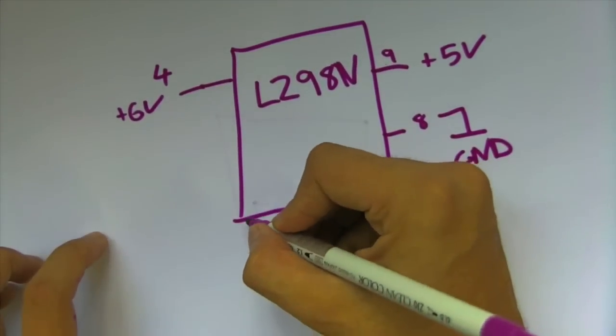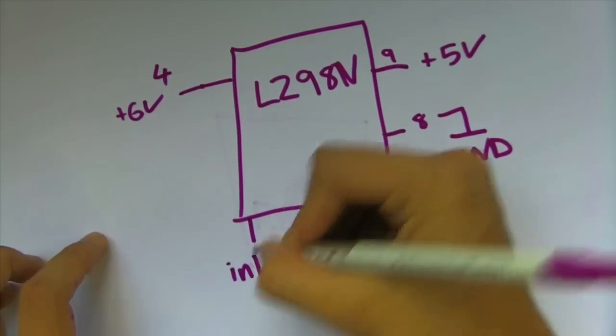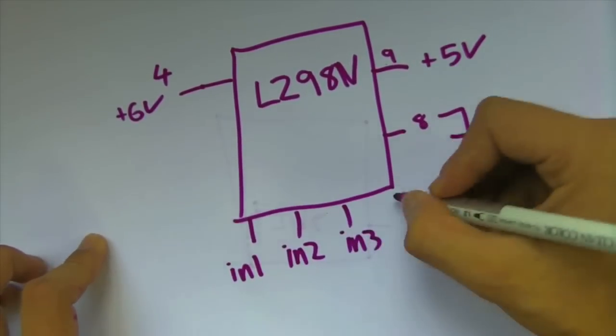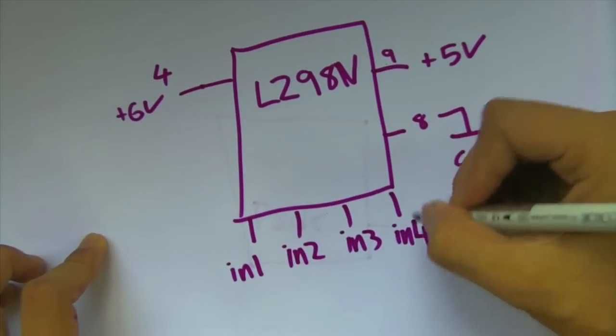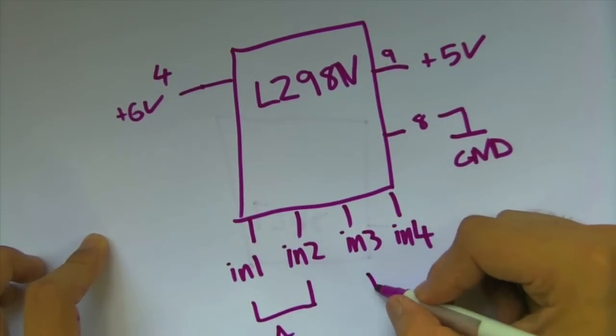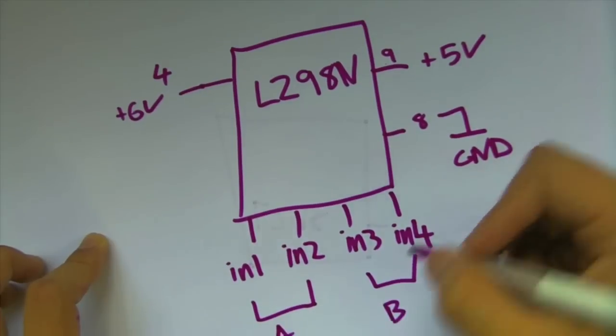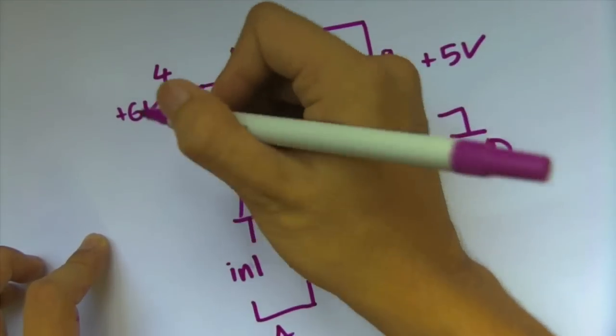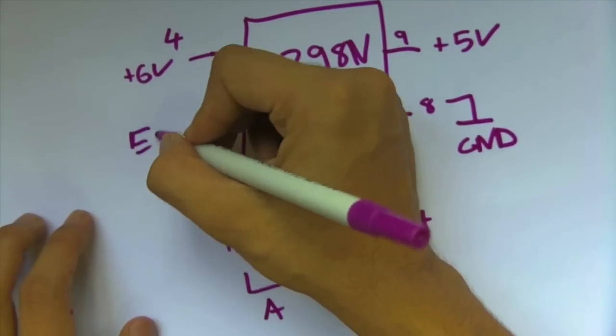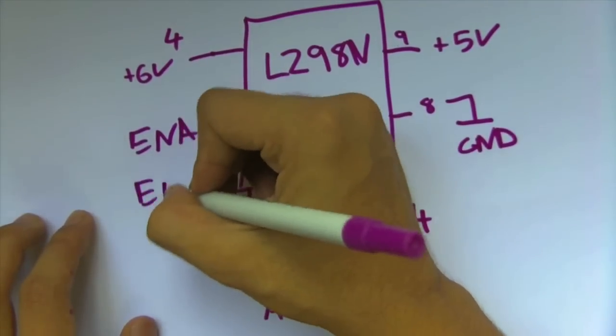You have 4 inputs as well. In 1, 2, 3 and 4. In 1 and in 2 control motor A, while in 3 and 4 control motor B. And, you have 2 enable pins as well. That's enable A and enable B.